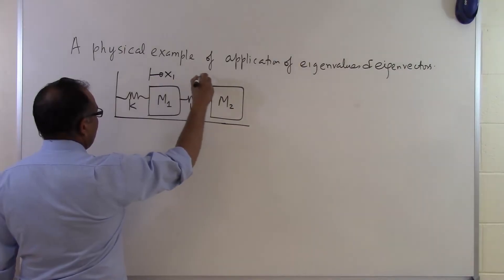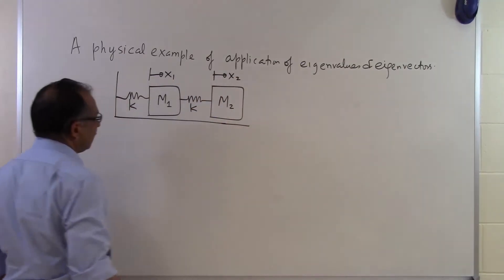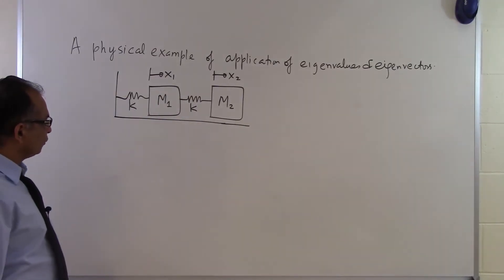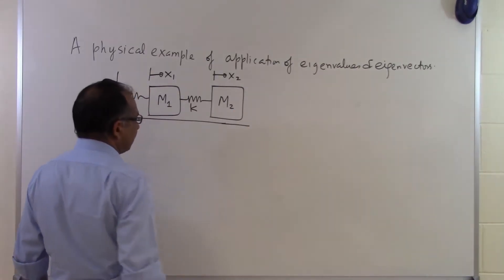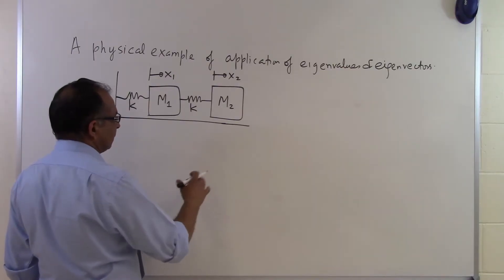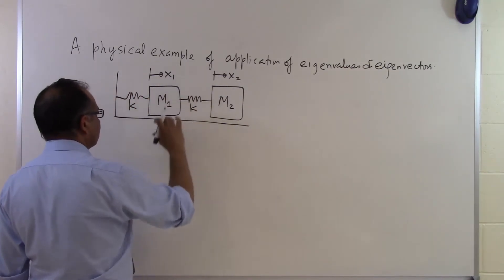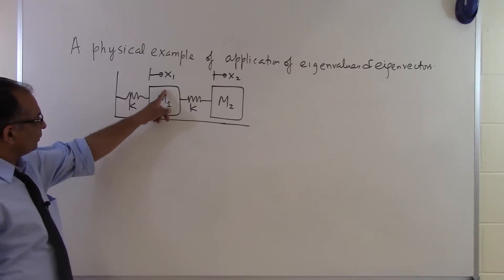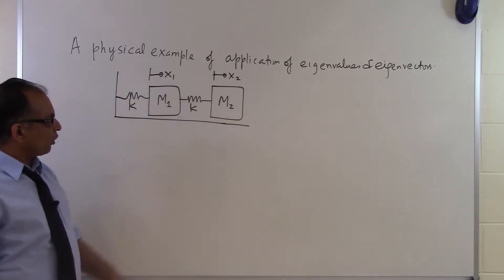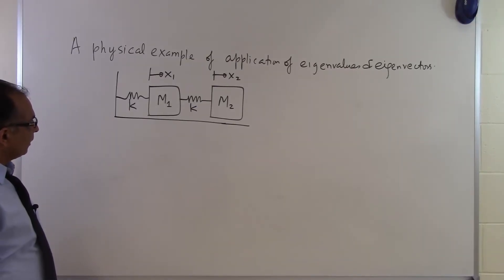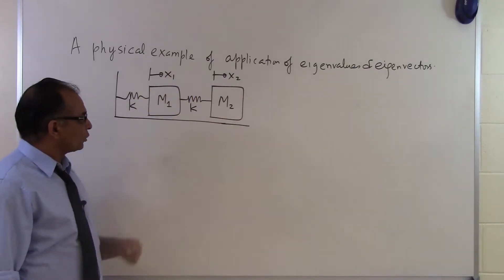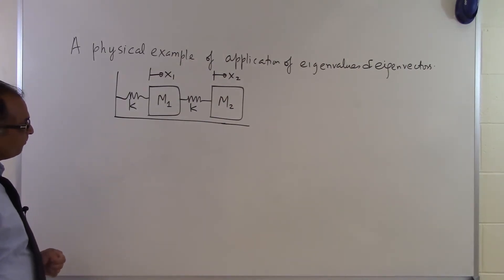We want to measure what x1 and x2 are — how does mass m1 and m2 move when you pull them or apply some forcing function. Taking the simple case where you pull mass m2, m1 also gets pulled with it, and then you leave it alone. What happens is m1 and m2 will oscillate because there is no damping. We want to figure out how x1 and x2 vary as a function of time, and then see how this relates to eigenvalues and eigenvectors.